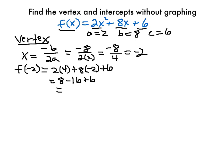which is equal to 8 minus 16, plus 6, which is equal to, this will be minus 8, minus 8 plus 6 will be minus 2. So my vertex will be, my x-coordinate is minus 2, and my y-coordinate was minus 2.